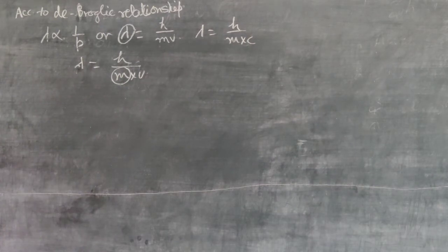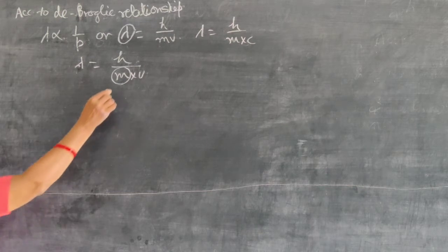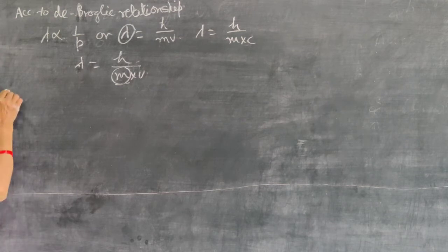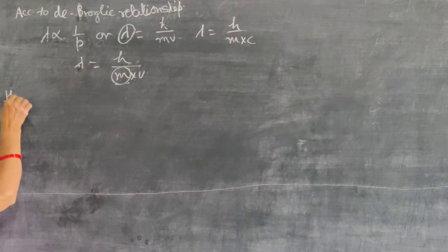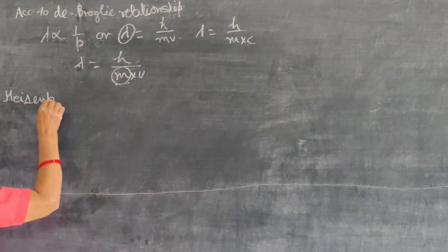Particles which can behave dually must have insignificant mass - that you can see. Mass is a very important property for dual behavior. Now after the de Broglie relationship, there is one principle called Heisenberg's uncertainty principle.